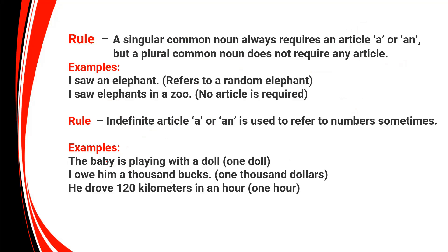See another rule: an article will be used before a common noun. You know the difference between a common noun and a proper noun. Proper nouns are names like Krishna, Rama, James. Common nouns are girl, boy. Before common nouns you will use an article, but the noun should be singular. For example, 'I saw an elephant' — elephant is a common noun, singular. But 'I saw elephants in a zoo' — that common noun is plural, so you will not use any article before it.